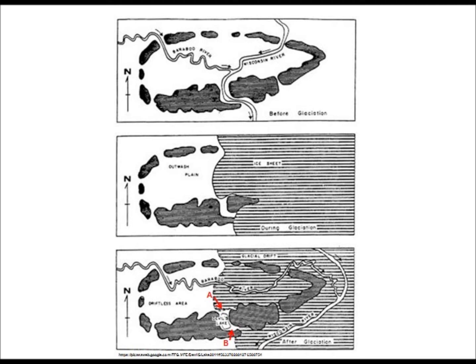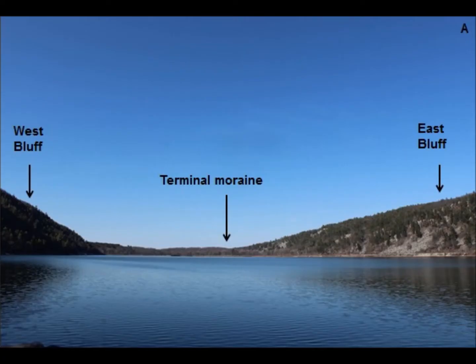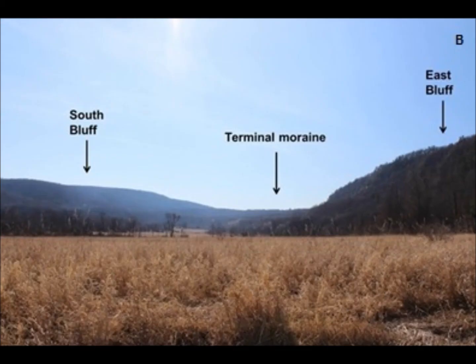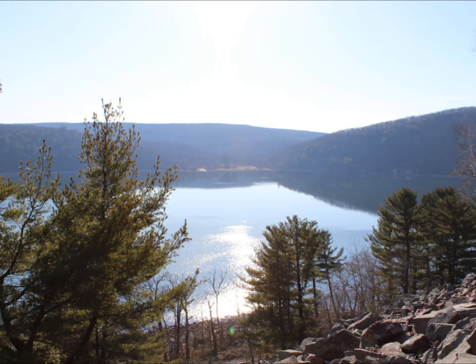Terminal moraines can be seen today looking towards the north end of Devils Lake, point A on the bottom figure, and the southeast end of Devils Lake, point B on the bottom figure. This picture shows the terminal moraine on the north end of the lake, and this picture shows the terminal moraine on the southeast end of the lake.